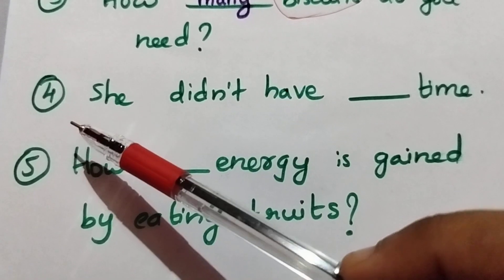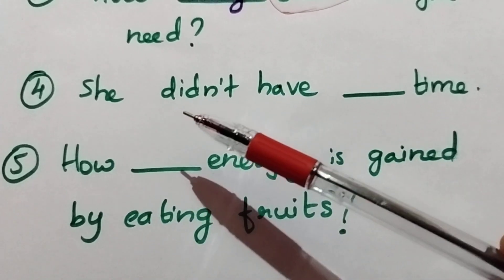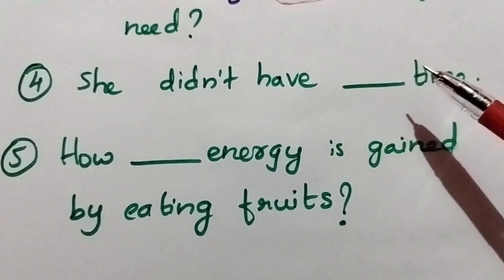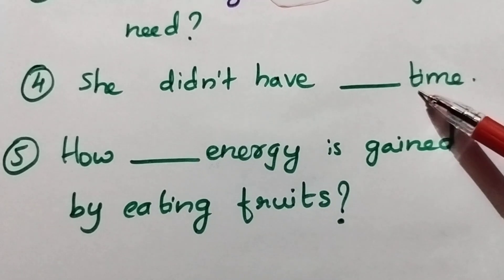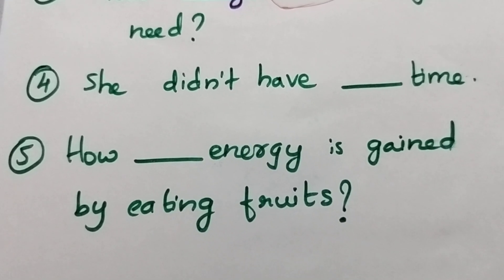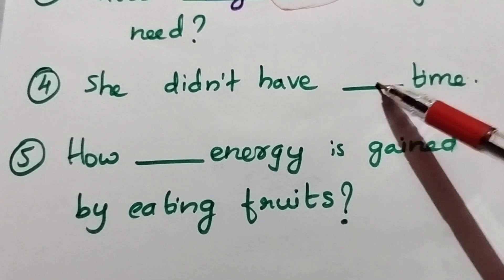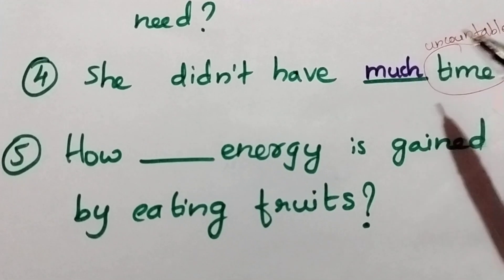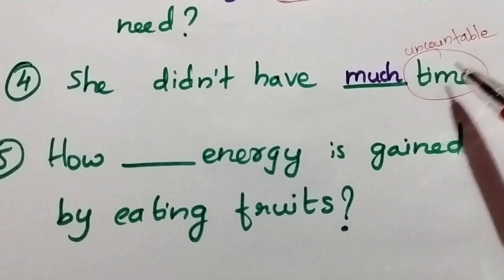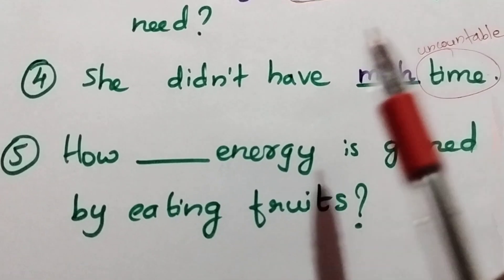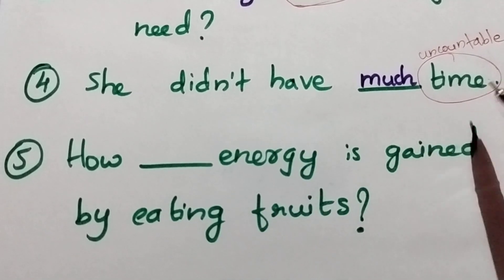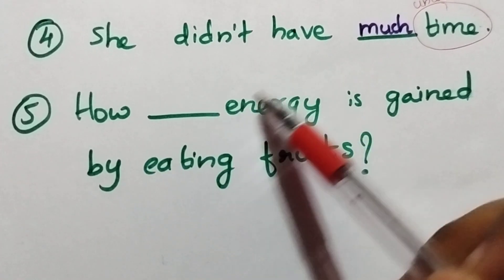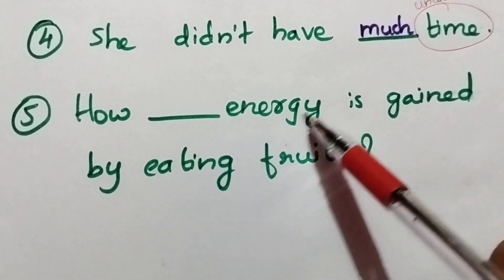Fourth: 'She didn't have ___ time.' Can you count time? No. So you use 'much' because time is uncountable: 'She didn't have much time.'